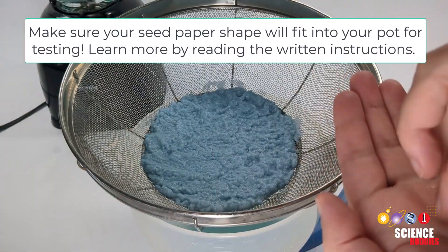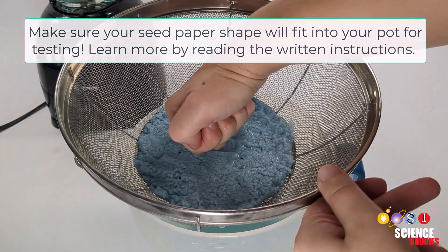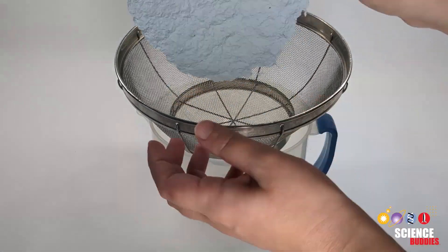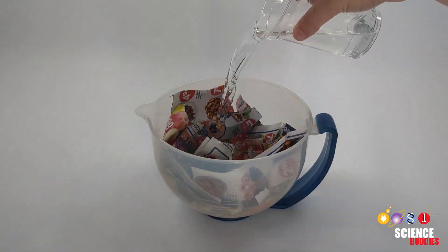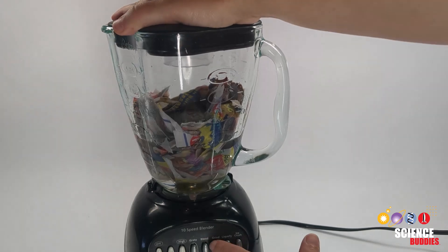Count out your seeds and evenly disperse them on top of the pulp. Push the excess water out of the pulp into the strainer with your fist. Lastly, let the pulp dry overnight to create the seed paper. Repeat these steps for your other paper products. For example, you could use magazines or newspaper.